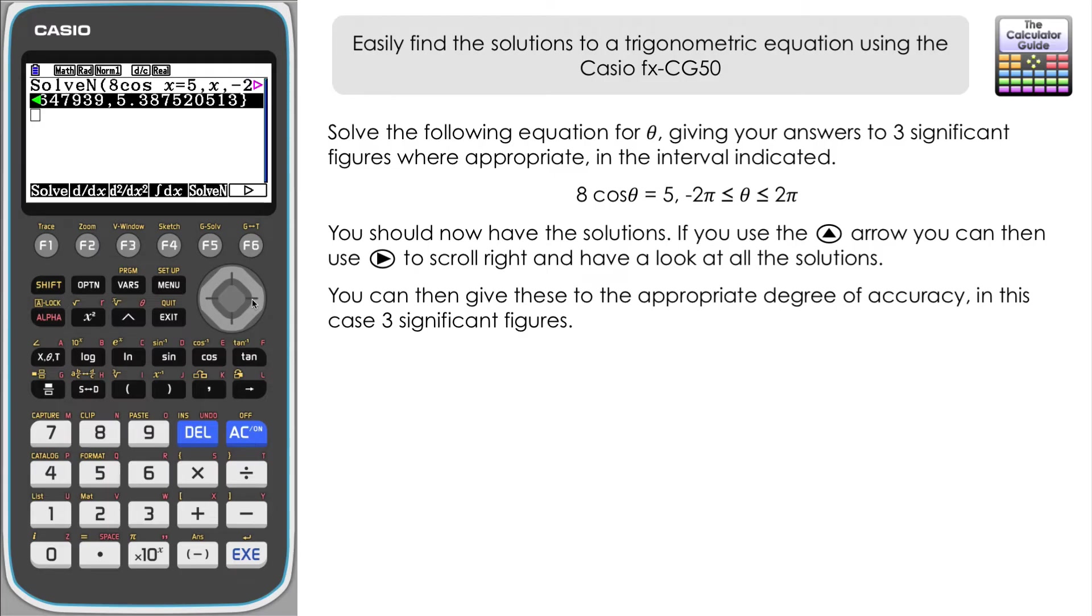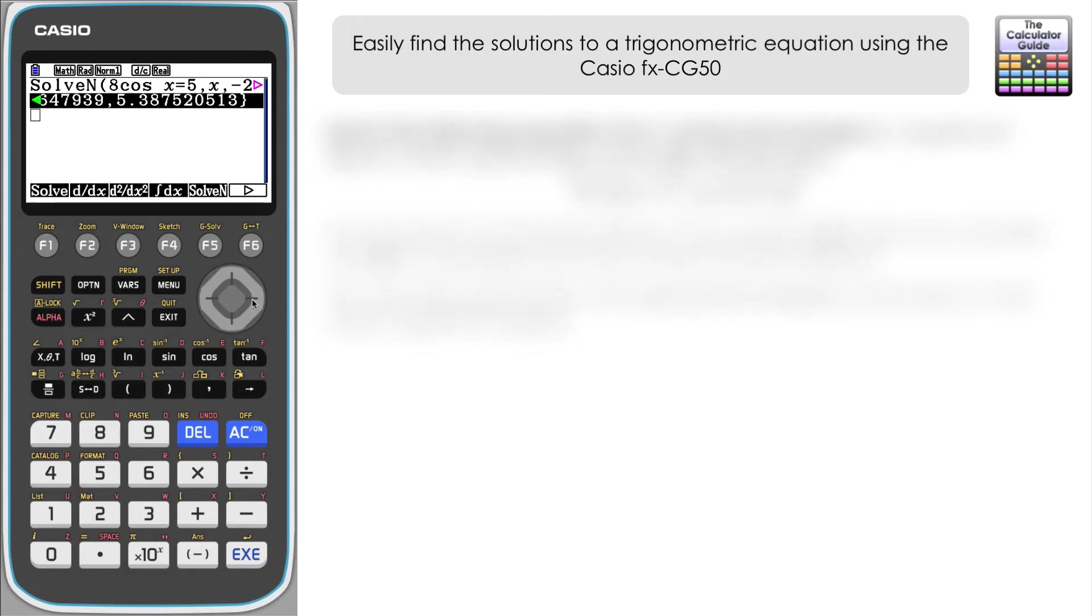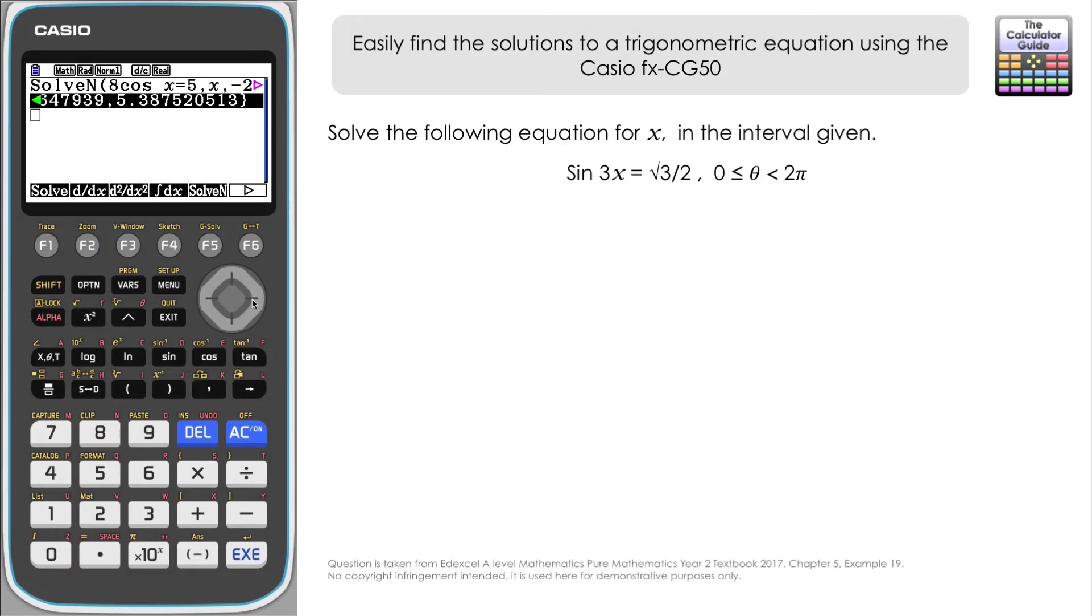Okay, let's have a go at another question here. This one will have two more solutions, in fact six solutions in total. We've got sin(3x) = √3/2 between the interval for x of 0 and 2π. So we want to find all the solutions and we're going to get exact answers for these solutions as well, which the calculator does give for us, so that is really good.